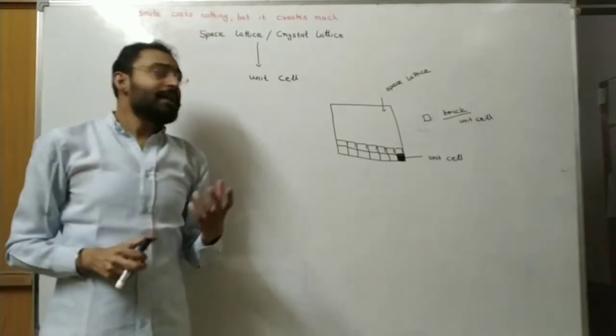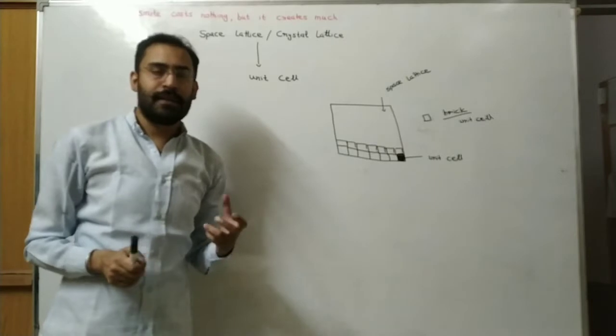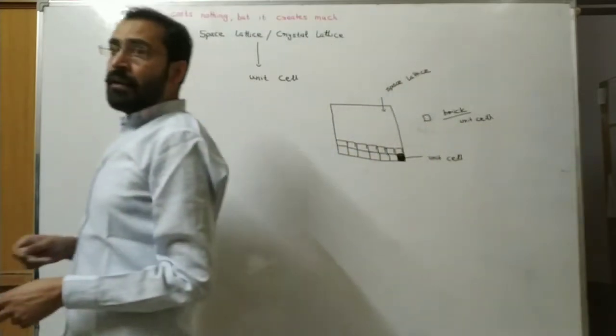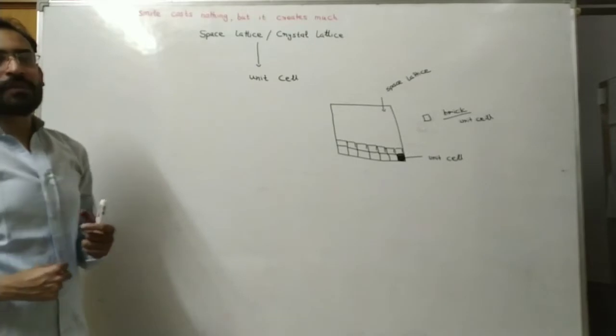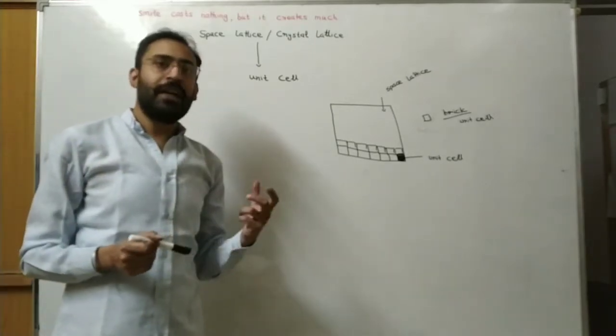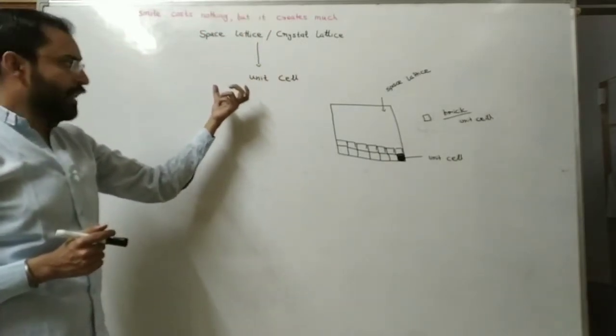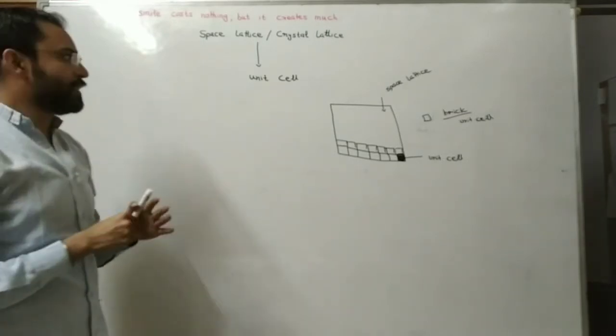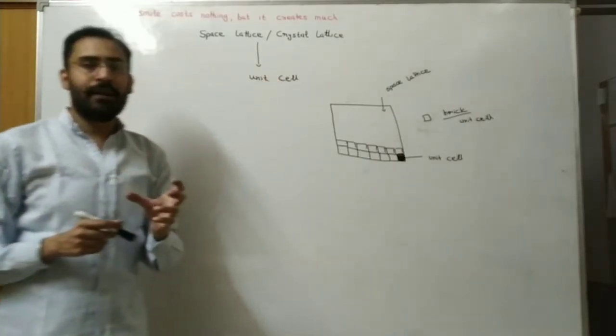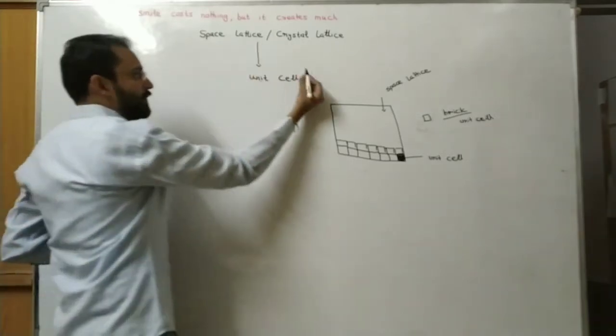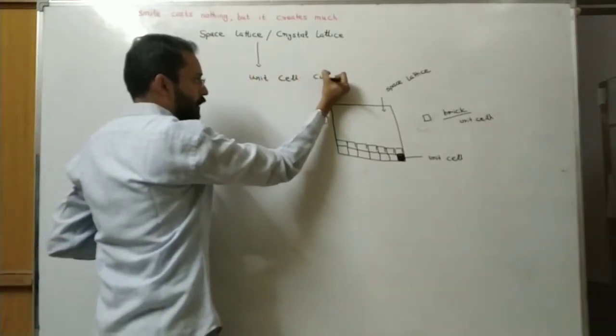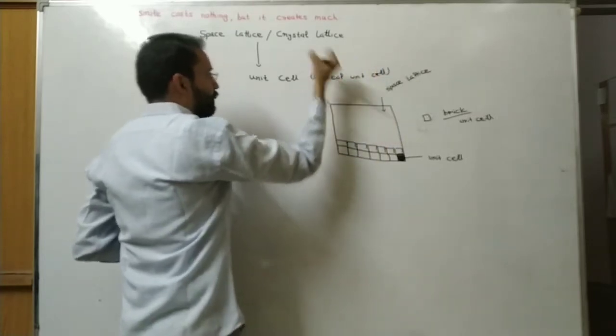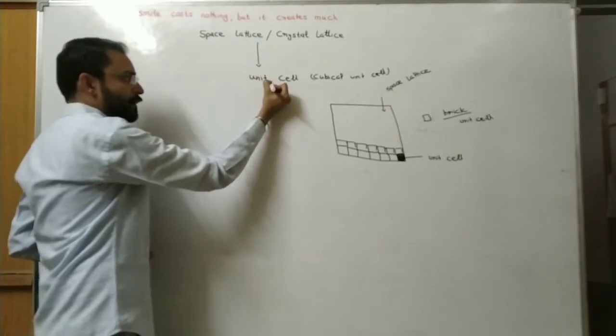By the way, there are 7 types of crystals like cubical, monoclinic, triclinic etc. We will discuss about these 7 types of crystal systems in some other video. In this particular lecture, I will take only cubical unit cell. So from now onwards, we consider unit cell as a cube - a cubical unit cell having edge length A.